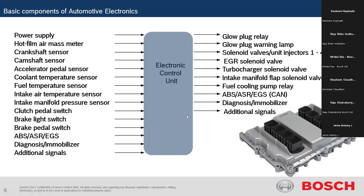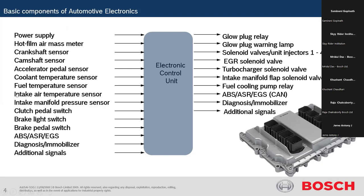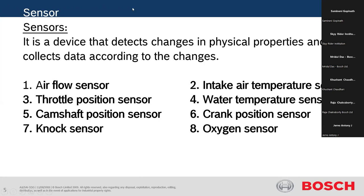There are eight main sensors in a vehicle comprising the basic sensor elements: airflow sensor, intake air temperature sensor, throttle position sensor, water temperature sensor, camshaft position sensor, crank position sensor, knock sensor, and oxygen sensor. Beyond these eight basic sensors, there are also ABS sensors, fuel temperature sensors, NOx sensors, lambda sensors, and coolant sensors. Sensors collect data according to changes in physical properties.